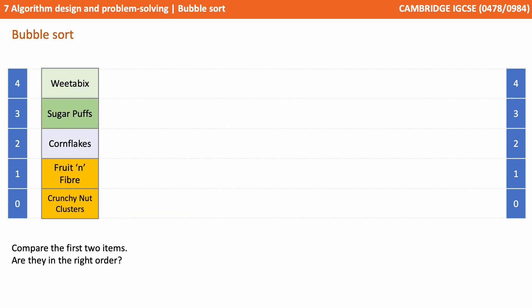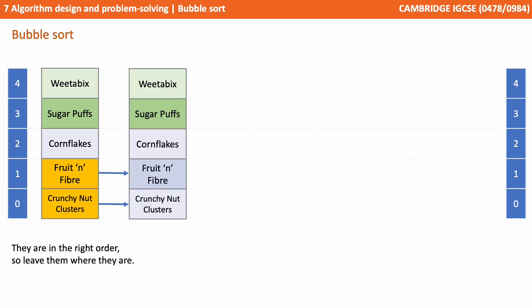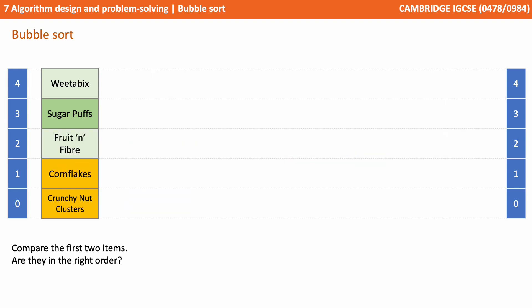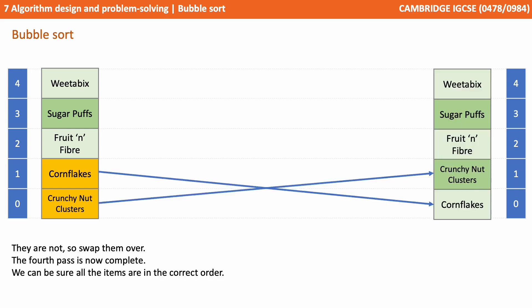We start our third pass. We compare the first two items — they are in the correct order, so we leave them where they are. We compare the next two items — they're not in the correct order, so we swap them over. The third pass is complete and we now know the top three items are in the correct place. We now compare the first two items — this is our fourth pass. They're not in order, so we swap them over. The fourth pass is now complete. There are no more swaps to be made, so we can be sure that all items are now in the correct order.